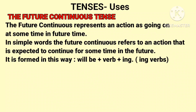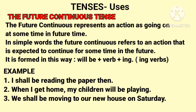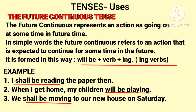Now the next one: future continuous tense. The future continuous tense represents an action as going on at some time in the future. In simple words, the future continuous refers to an action that is expected to continue for some time in the future. It is formed as: will or shall plus be plus verb plus -ing. For example: I shall be reading the paper then — 'shall be reading' is future continuous tense.